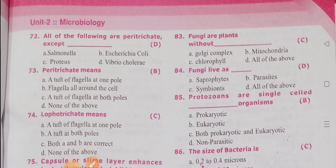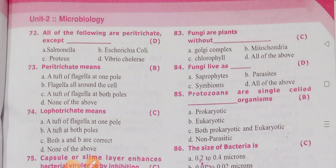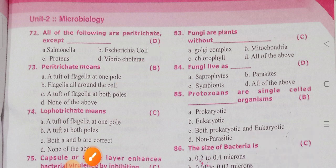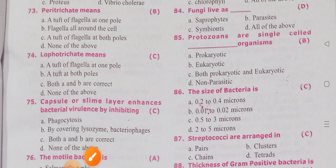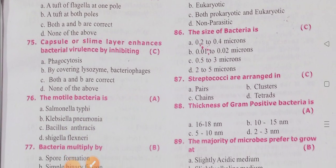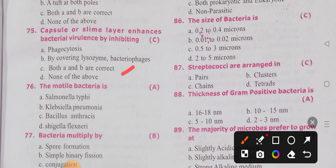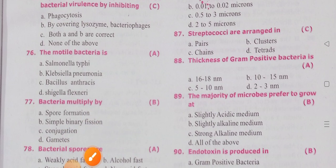Capsule is chemically composed of polysaccharides. Capsulated bacteria include Klebsiella pneumoniae. Mesosomes are known as the chondroid. Bacterial locomotion is accomplished by both fimbriae and flagella. Size of fimbriae is 0.1 to 1.5 micrometers. Peritrichous arrangement means flagella all around the cell. Lophotrichous means a tuft of flagella at one pole.